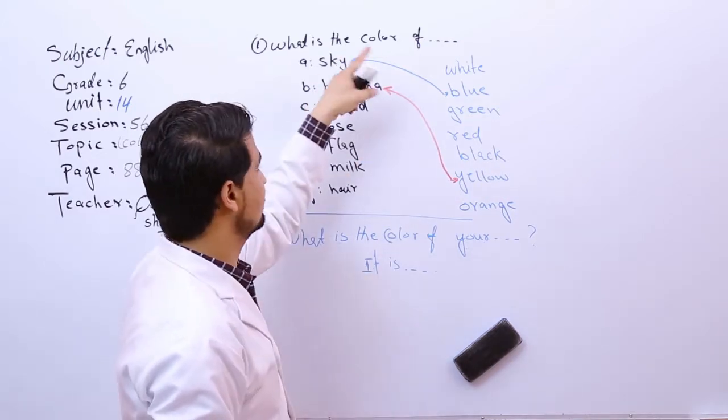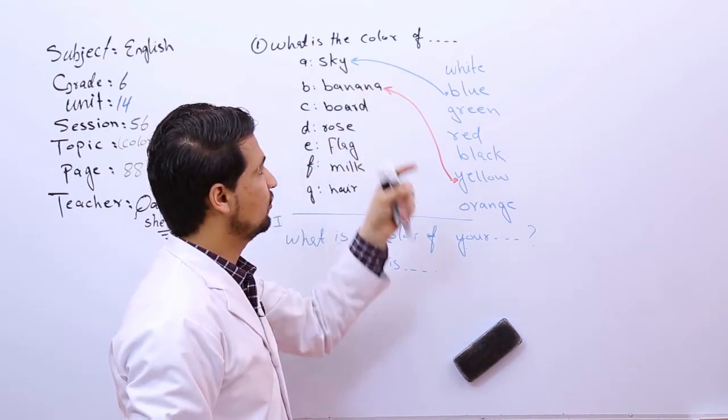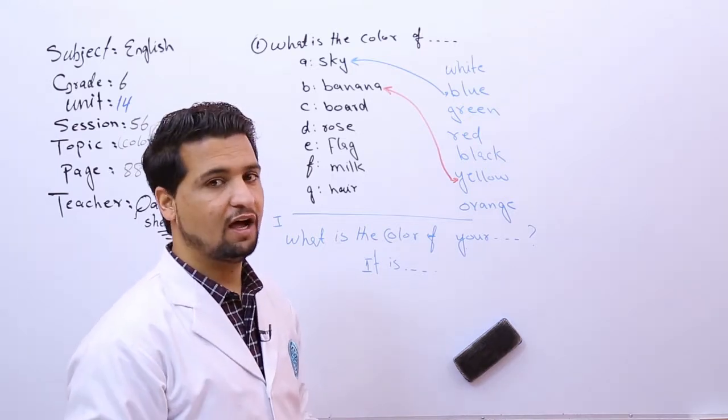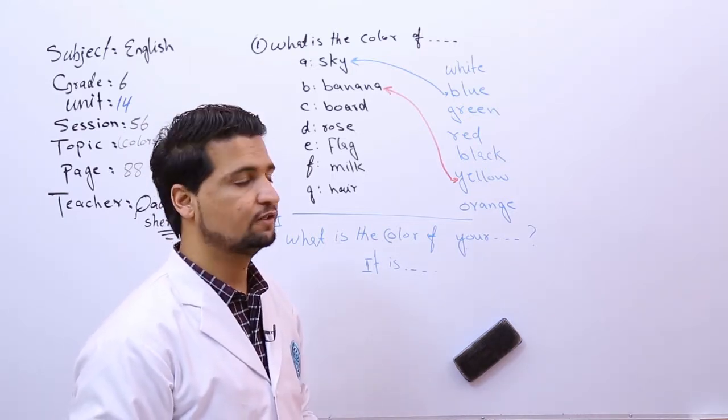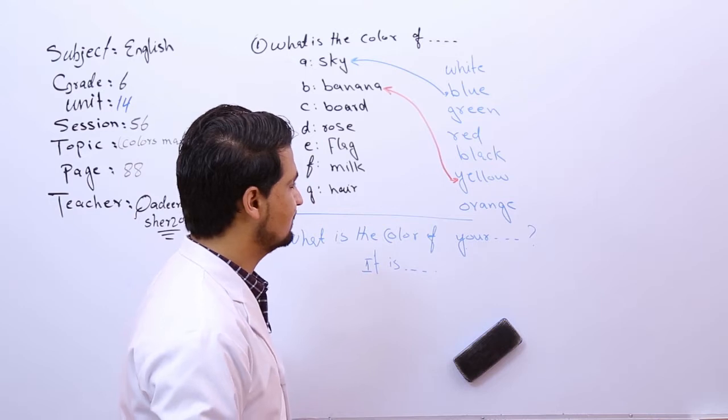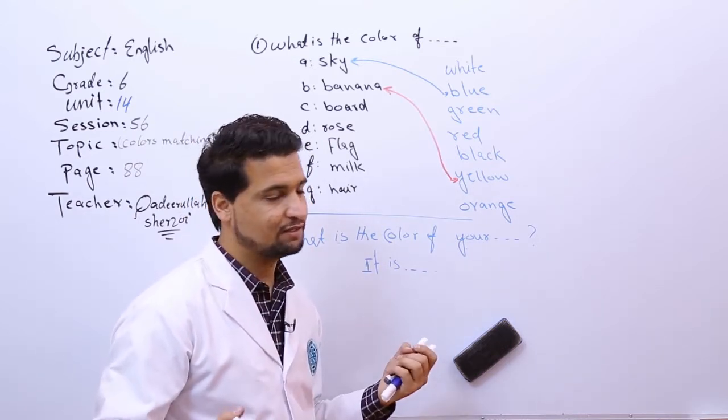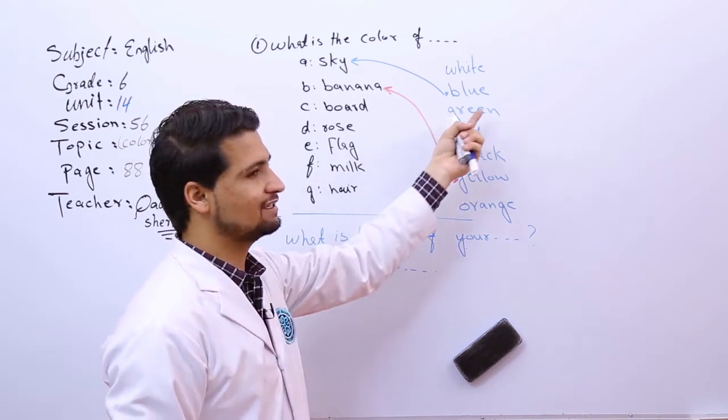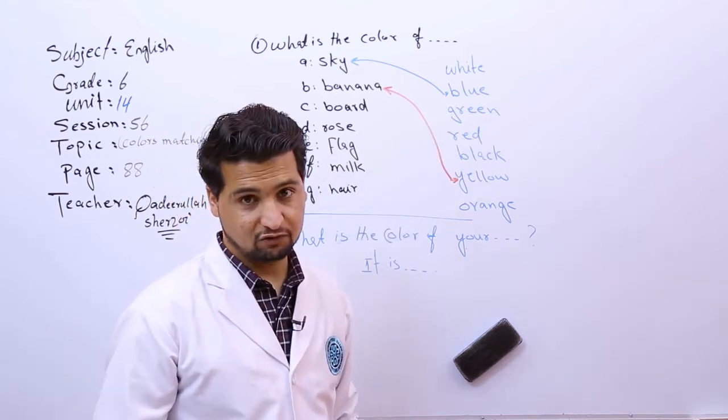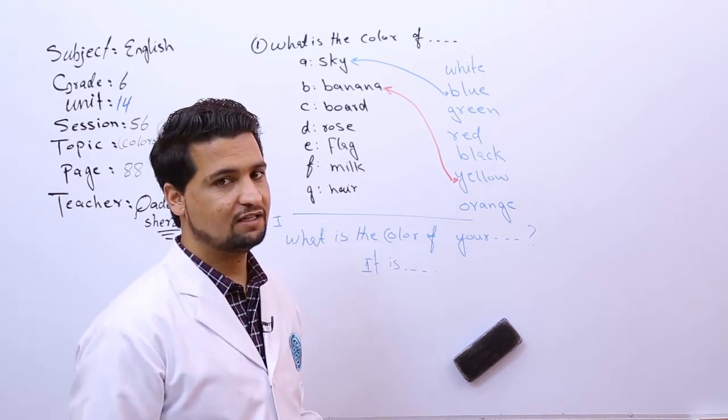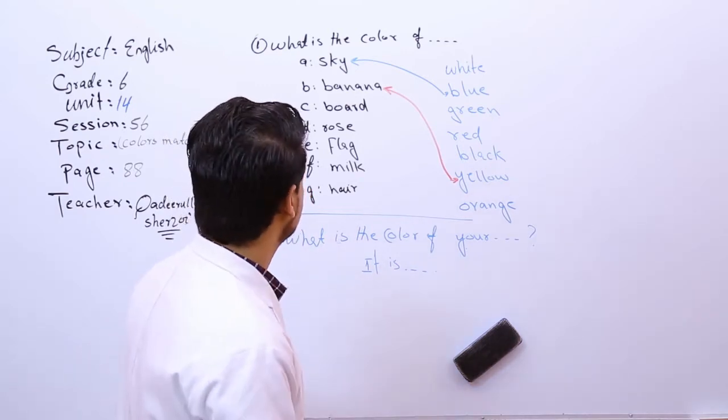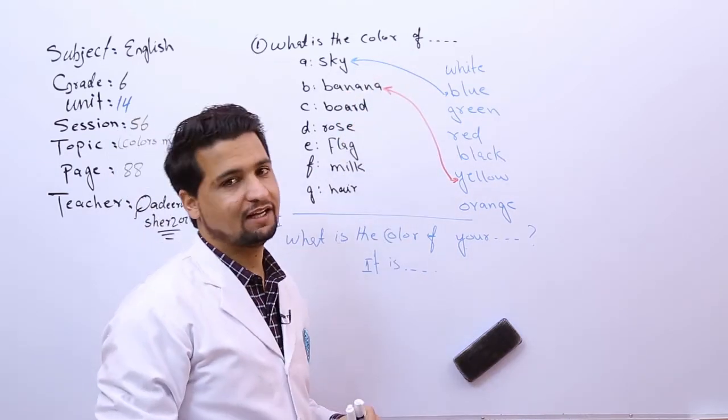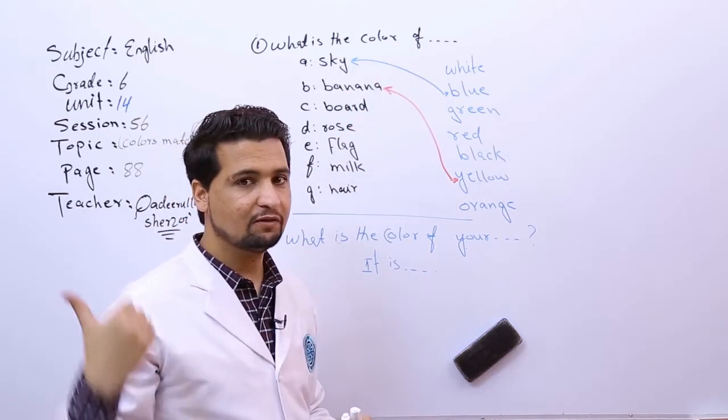What is the color of banana? It is yellow, it is green. It is not green, very good. See, what is the color of board? We have green board, we have white board, and we have black board.